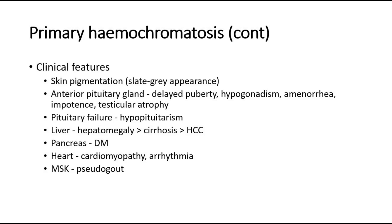If the iron is deposited in the liver, it can cause hepatomegaly, liver cirrhosis, and can also progress to hepatocellular carcinoma. In the pancreas, it will cause diabetes mellitus. If the iron is deposited in the heart, it can cause cardiomyopathy or arrhythmia. For the musculoskeletal system, it can cause pseudogout as well.